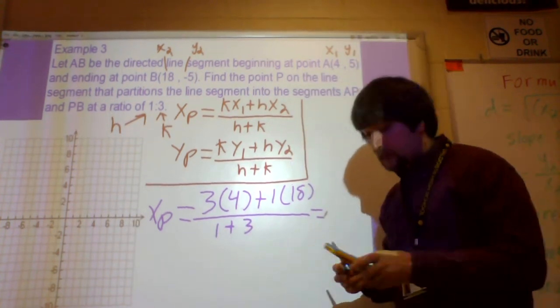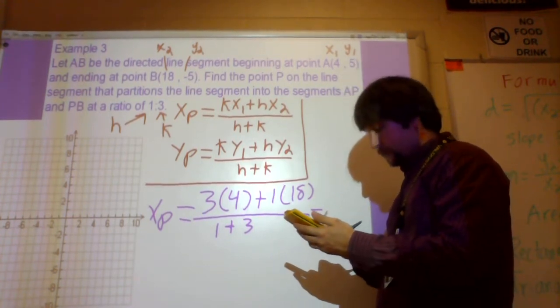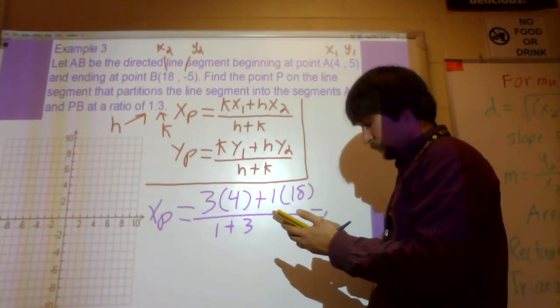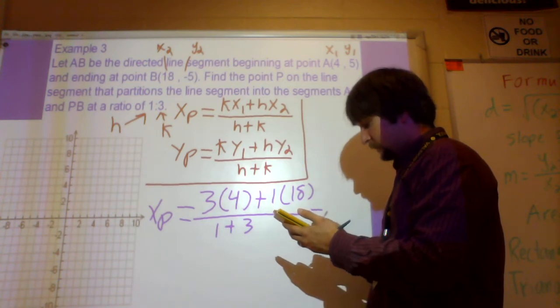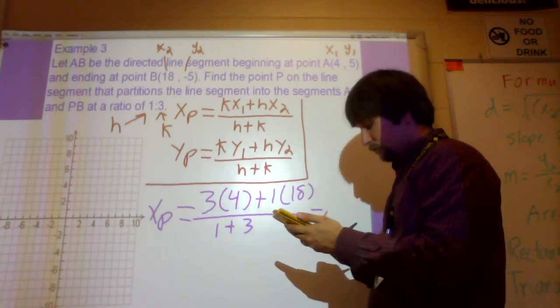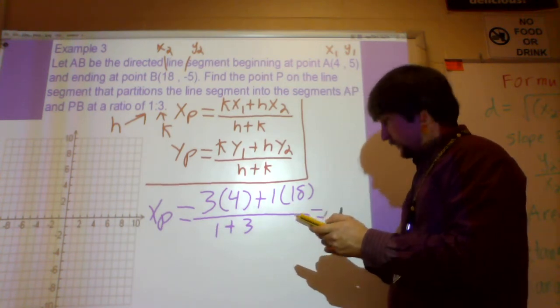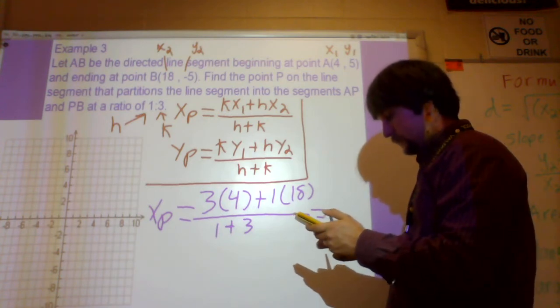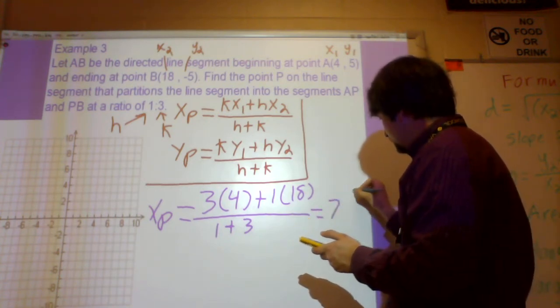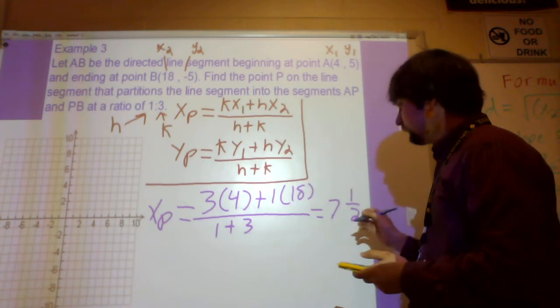You would just type this whole thing in your calculator right here. So at this point, you would just do 3 times 4, plus 1 times 18, divided by 1 plus 3, which is just 4. And so that's going to give you 7 and 1 over 2. That's your X part.